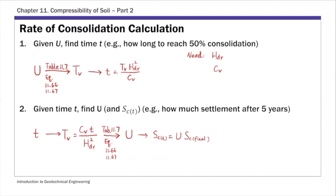Just a very quick review of what we covered last time. For rate of consolidation calculation, there are three types of problems. The first one is given U, which is the average degree of consolidation, you are asked to find the time it takes to reach that. For example, how long it takes to reach 50% consolidation. The path is: from U, using Terzaghi's solution (table 11.7), find the corresponding time factor T_v, and from that back-calculate small t. We went over one example last time.